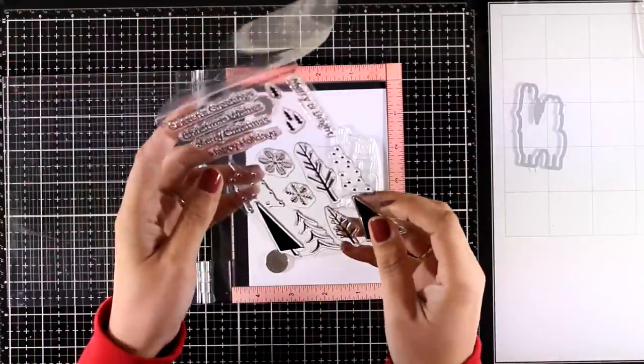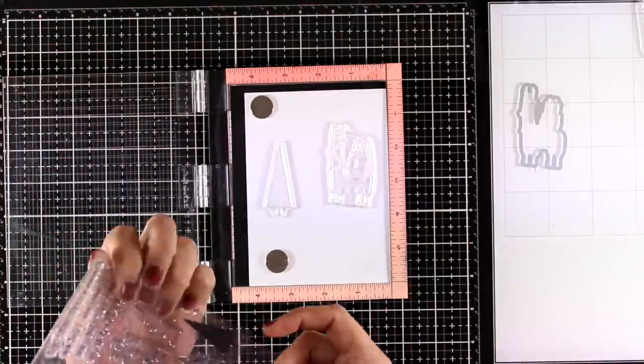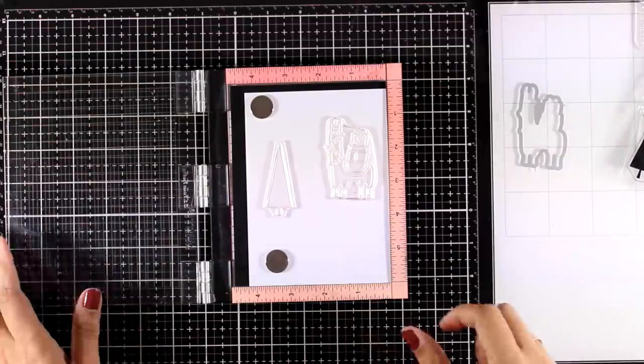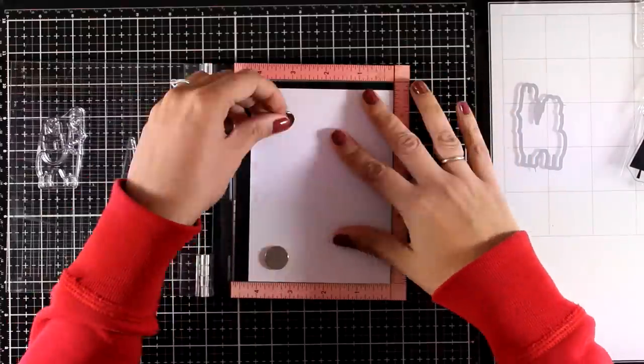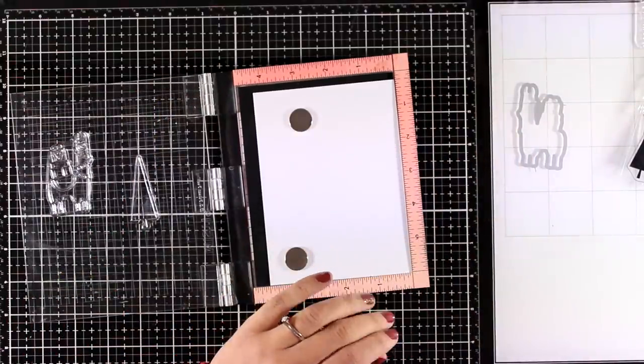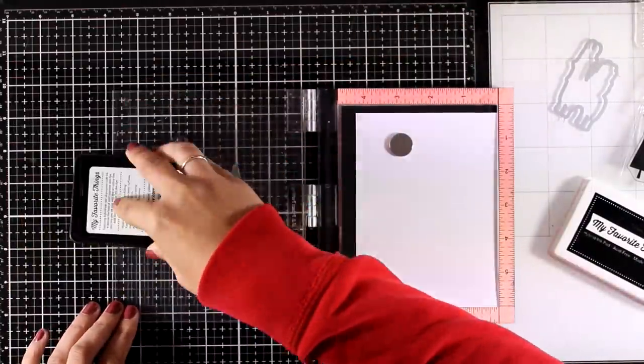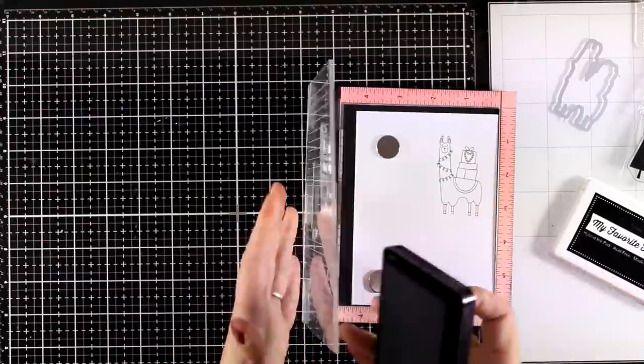Now I'm also going to pick one of the trees from the Trio of Trees, and this is actually a layering stamp set where there are two or three stamps for one tree that you can use to decorate it and make it more interesting. I'm going to use my MISTI to stamp the tree and the llama. For the llama I'm going to use black ink, and this is the hybrid ink which means you can use it for alcohol markers as well as for watercoloring.